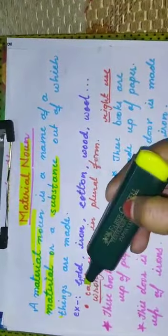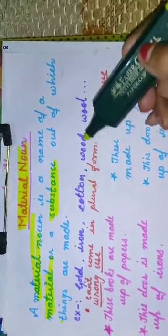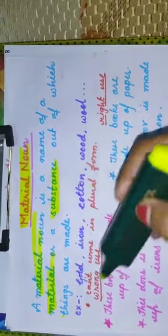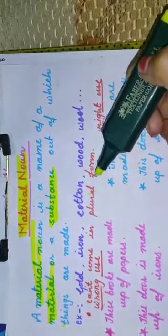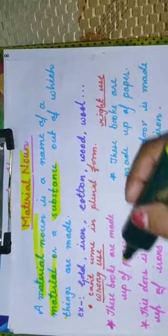The common examples of it are gold, iron, cotton, wood and wool. The bullet point or the important point about material noun is it can't come in plural form. Material noun can't be used in plural form.